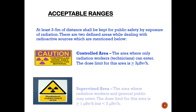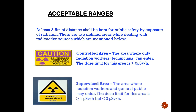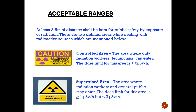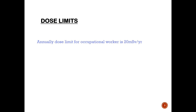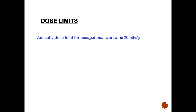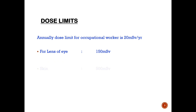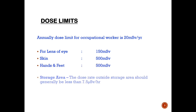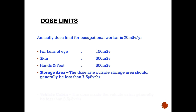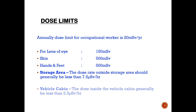The annual dose limit for occupational workers is 20 millisievert per year. For the storage area, the outside dose should not be more than 7.5 micro sievert per hour, and the vehicle cabin level should generally be less than 2.5 micro sievert per hour.